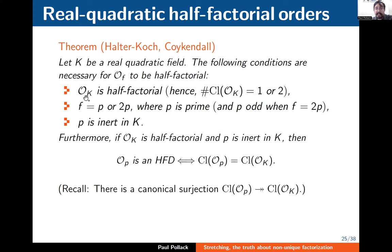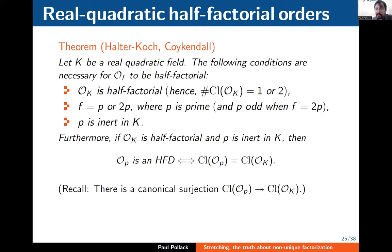Suppose I have a real quadratic field K. For the order of conductor F to be half-factorial, the following conditions are necessary: first, the maximal order O_K must be half-factorial, which by Carlitz's theorem means class number 1 or 2; second, the conductor F must be either a prime or twice an odd prime; and third, that prime must be inert in K. Furthermore, if we focus on orders of conductor p, assuming O_K is half-factorial and p is inert in K, then O_p is a half-factorial domain if and only if the two class groups coincide — the class group of the order and the class group of the maximal order.